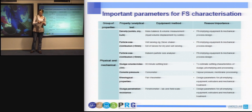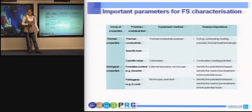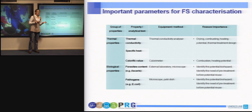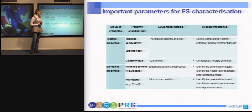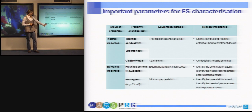The next group is thermal properties, mainly important for thermal treatment processes or design of facilities for processing such as combustion, heating, and drying. Here we have incorporated thermal conductivity, specific heat, and calorific value. The last group is biological properties, which incorporates parasites content and pathogen content.